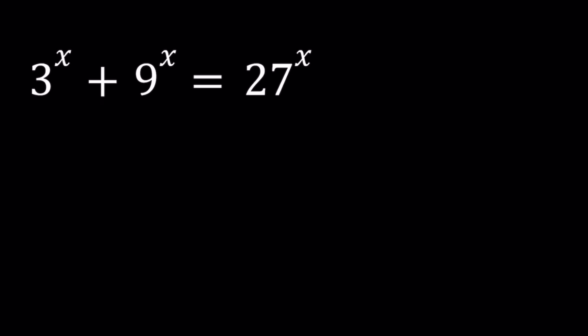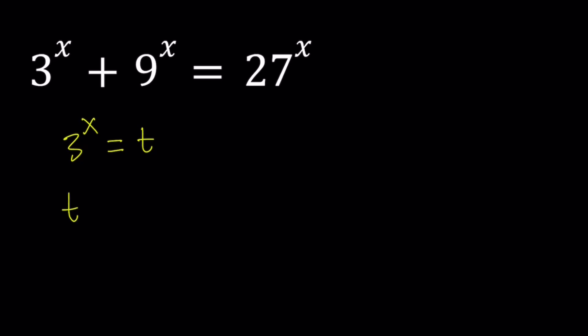To solve this problem we're going to be using substitution. Notice that 9 and 27 are both powers of 3, so it would make sense if we replace 3 to the power x with another variable. Let's use t. This means that 9 to the power x is t squared and 27 to the power x is t cubed. So we can write this equation as t plus t squared equals t cubed.